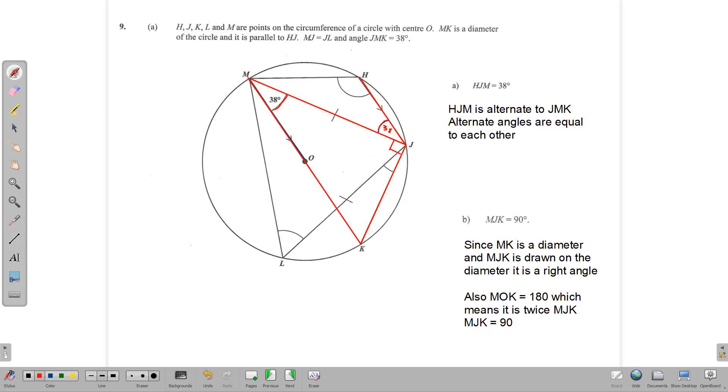Otherwise, we can use the fact that MOK is a straight angle here, and this angle MJK is drawn on that diameter again, using the fact that the angle at the center of the circle MOK, which is 180 degrees, is twice the angle on the circumference, which would also make it 90 degrees. So there are many explanations for that one.